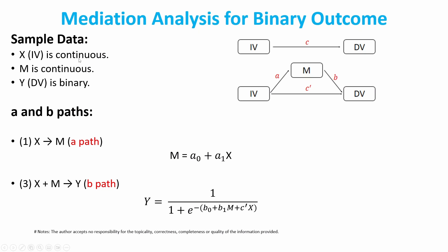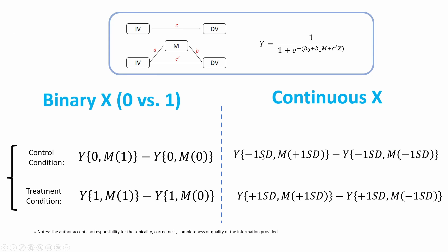But here x is continuous, so we need to tell the function that the treatment and control condition are not simply zero and one. We need to define a treatment value and a control value. For example, I use minus one standard deviation of x as the control and plus one standard deviation as the treatment. Of course, you can choose other values to define the treatment and control yourself.